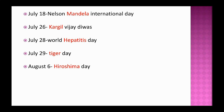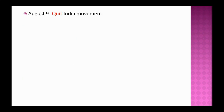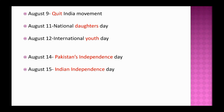6th August is Hiroshima Day. 7th August is National Handloom Day. 8th August is World Senior Citizens Day. 9th August is celebrated as Quit India Movement Day. 12th August is International Youth Day. 14th August is Pakistan Independence Day. 15th August is Indian Independence Day. 19th August is World Photography Day.